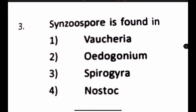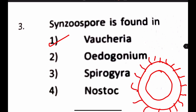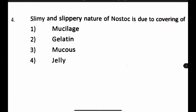Synzoospores are found in: Vaucheria, Oedogonium, Spirogyra, or Nostoc? Synzoospores is a characteristic feature of Vaucheria. The synzoospore is basically a multi-nucleated compound completely surrounded by flagella, which helps it become a motile structure with many nuclei in the center. Oedogonium and Spirogyra won't be the answer because they are filamentous, and Nostoc is also filamentous.